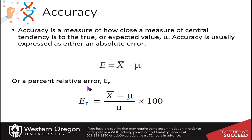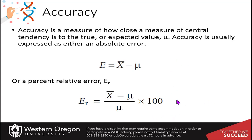For the percent relative error, E-relative equals the mean minus mu, divided by mu, times 100%. You've calculated percent error in many experiments up to this point — in Chemistry 200, for example — to see how your measurements compare to the expected value. This is review so far.